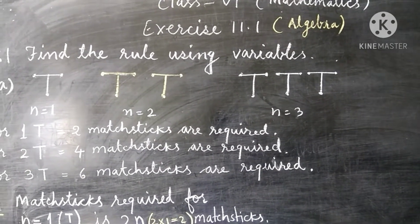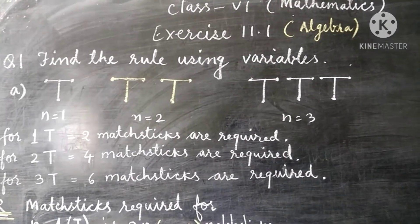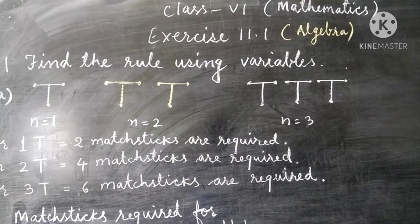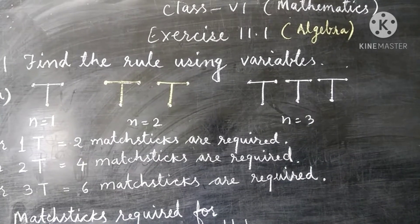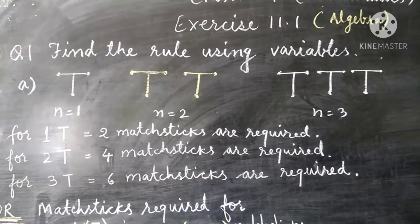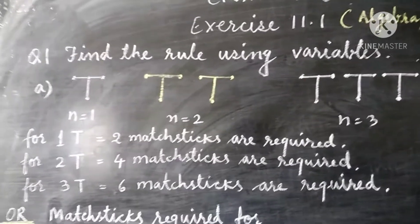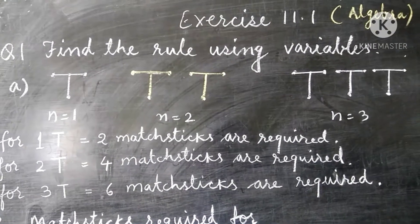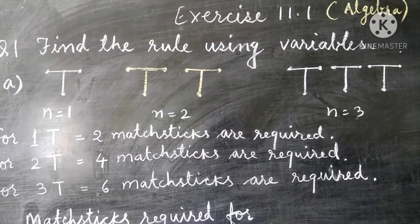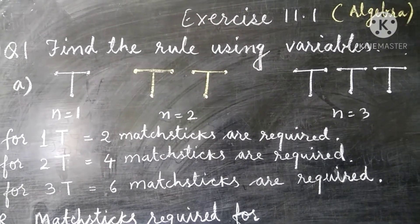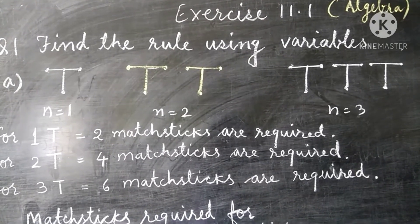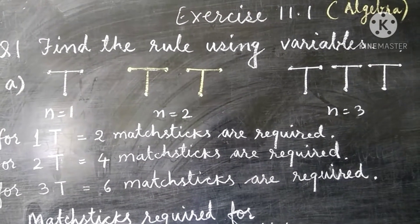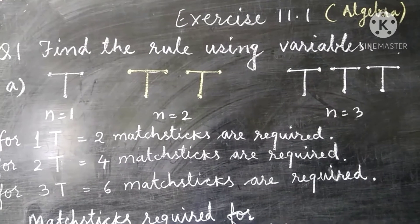Obviously eight. We need to know that for this construction, according to the number of T's, how many matchsticks are required. For one T, two matchsticks are required. For two T's, four matchsticks are required. For three T's, six matchsticks are required. And for four T's, obviously eight matchsticks will be required.